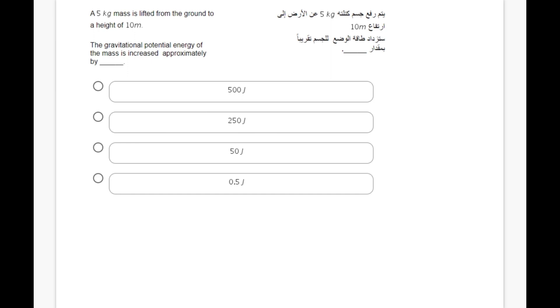First of all, in order to recall the gravitational potential energy, gravitational potential energy, the short form is GPE equals to mass times the acceleration of gravity times the height.